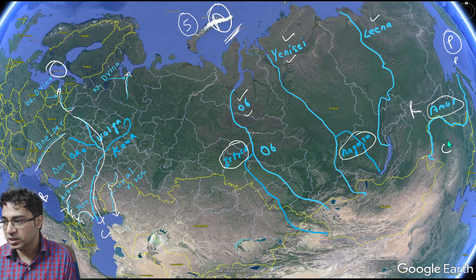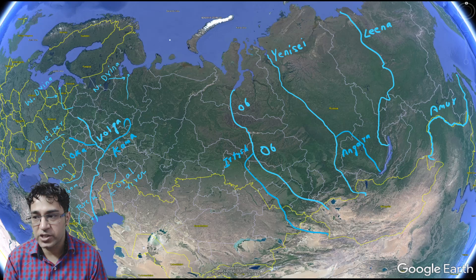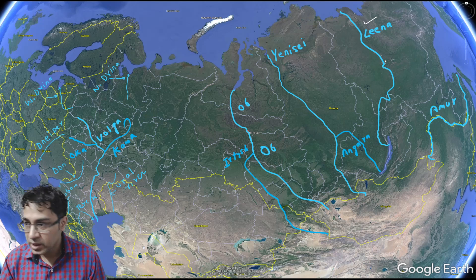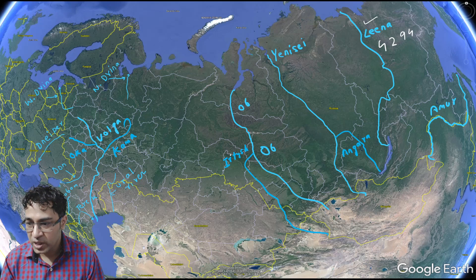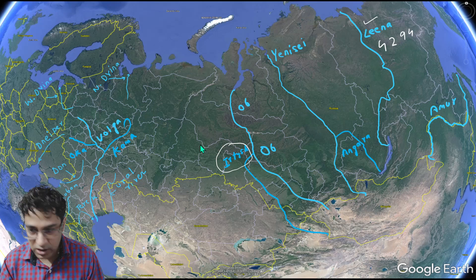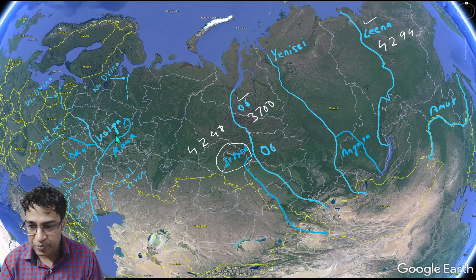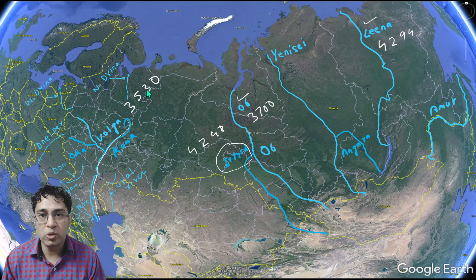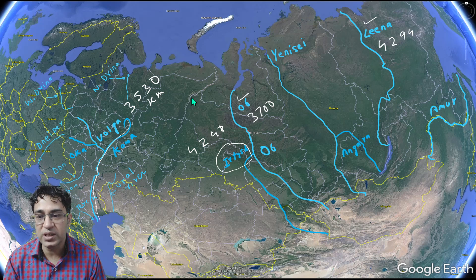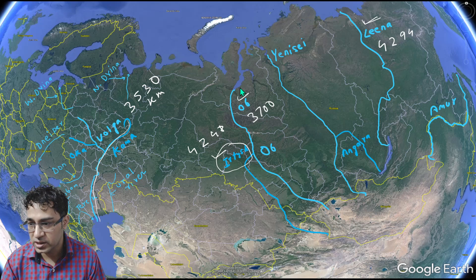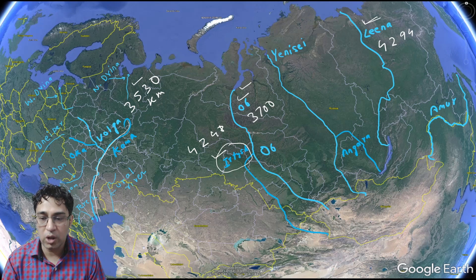Now let us look at the lengths of Russian rivers. The longest Russian river is the Lena at 4,294 km. The second longest is the Irtysh at 4,248 km. The third longest is the Ob at 3,700 km. The fourth longest is the Volga at 3,530 km. You don't need to remember the exact lengths — just remember the sequence: Lena, Irtysh, Ob, Volga. Note that the Volga is the longest river of Europe, but the longest river of Russia is the Lena.